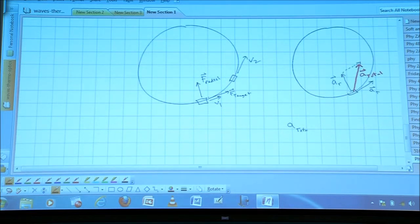So the total acceleration is the radial acceleration plus the tangential acceleration. And you add them vectorally. It's a vector addition.